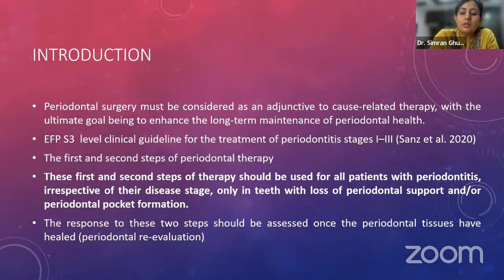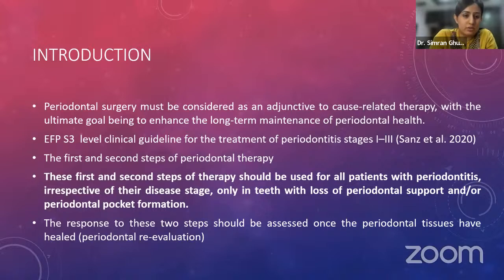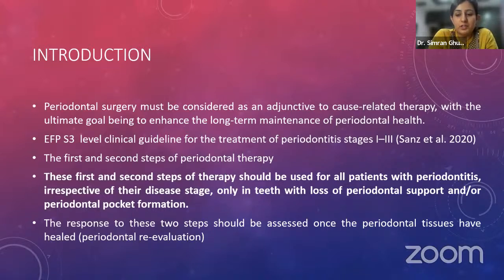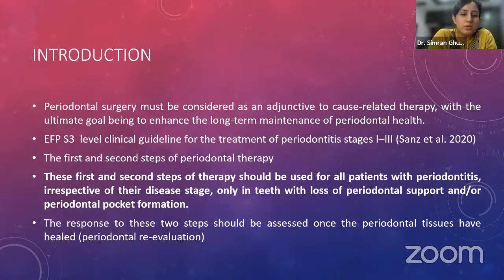The first and second steps of periodontal therapy are commonly referred to as cause-related therapy. The first step includes all needed behavioral changes and motivation required to undertake successful removal of supragingival dental biofilm by the patient, and all measures towards risk factor control, which can be cessation of smoking, glycemic control, stress reduction, etc. The second step includes professional interventions aimed at reducing and eliminating subgingival biofilm and calculus, with or without adjunctive therapies such as antimicrobials, anti-inflammatory drugs, host-modulation agents, or mouthwashes.